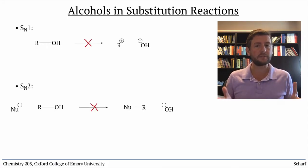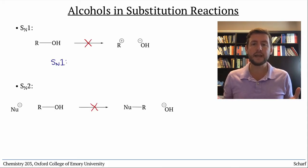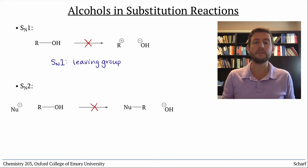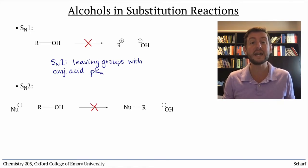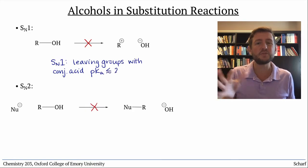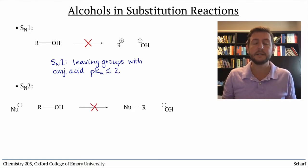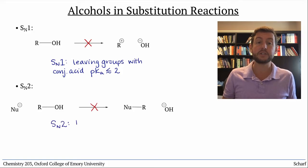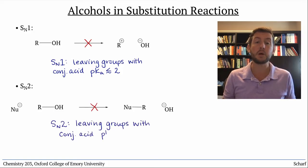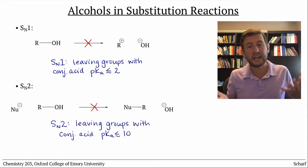For a frame of reference, SN1 reactions typically require leaving groups whose conjugate acids have pKa's below about 2, give or take a few. And SN2 reactions require leaving groups with conjugate acid pKa's below about 10, again give or take.